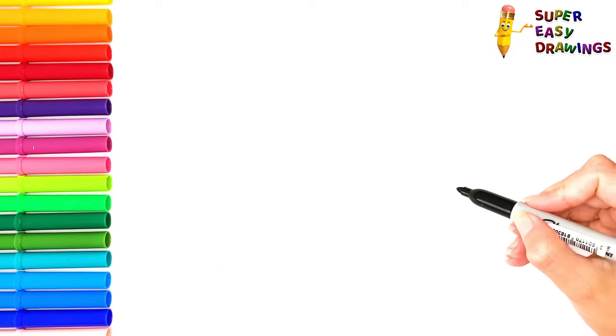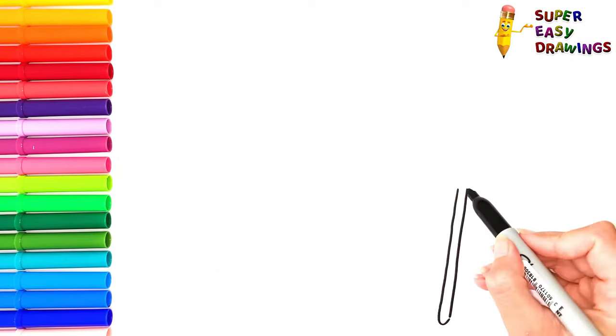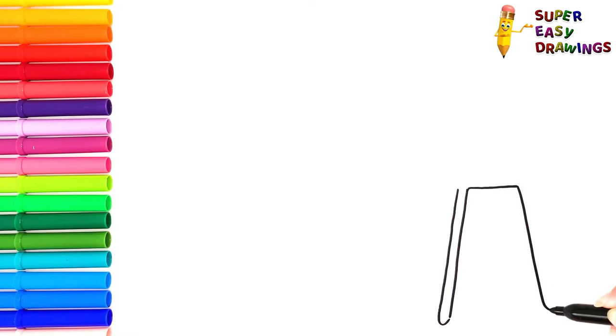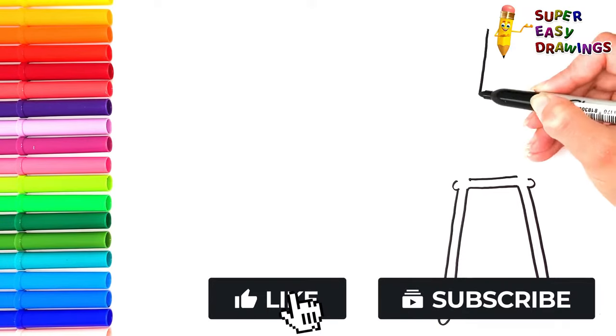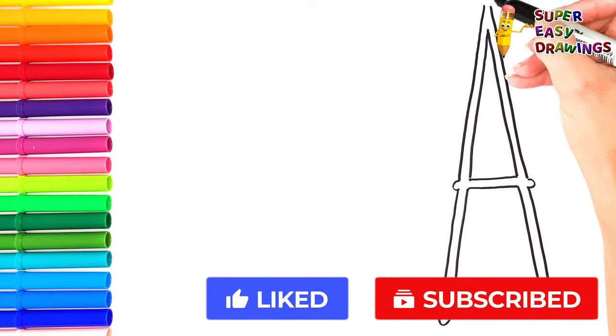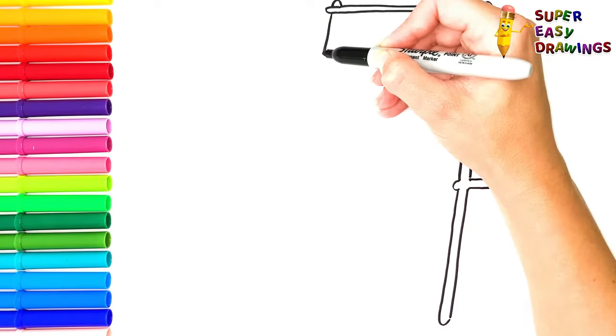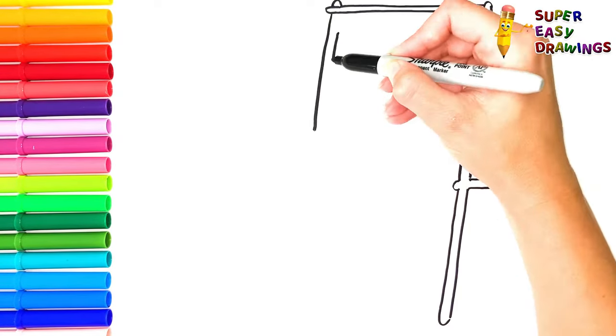At first, I'm going to draw the swing itself. I start with its legs. Then the top of it. Then the legs on the other side.